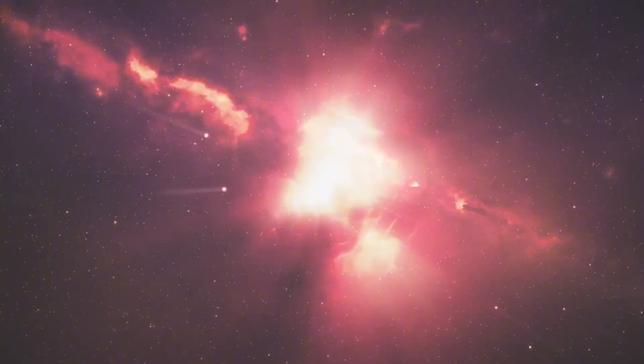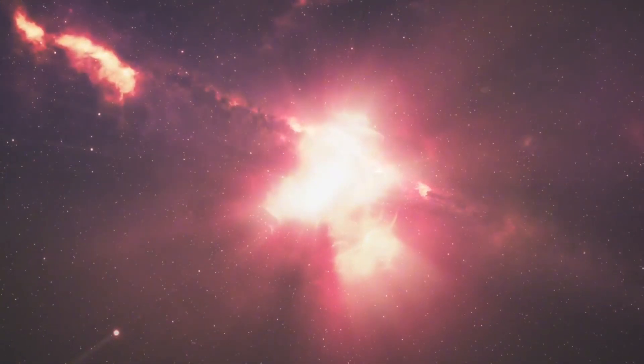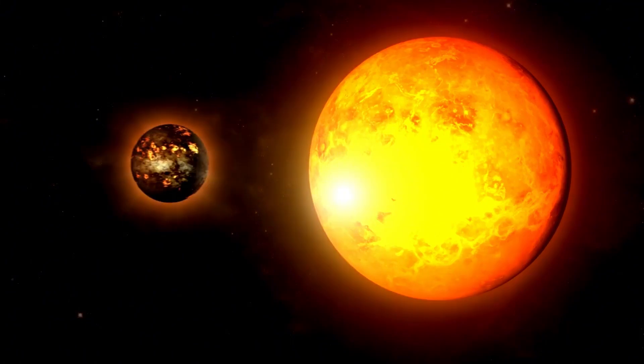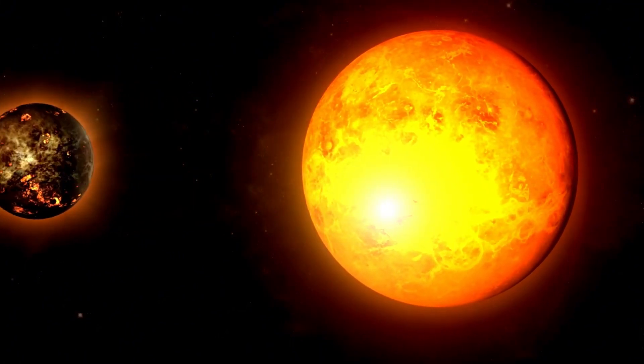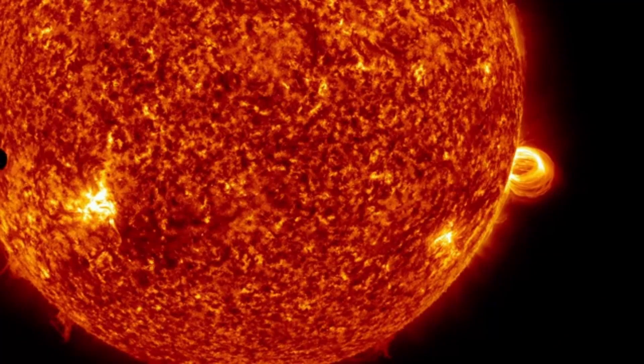Betelgeuse, a red monster star on the verge, is a galactic wonder. Assuming that you put it where the sun is, it would reach out to the orbit of Jupiter. It's huge, entirely temperamental, and it's going to detonate. Prepare for a vast fiasco of never-before-seen scale.